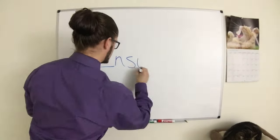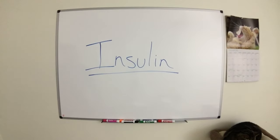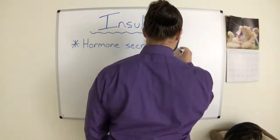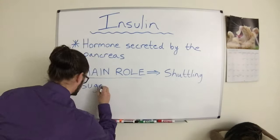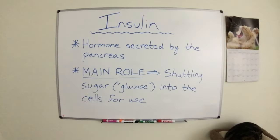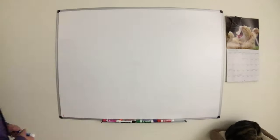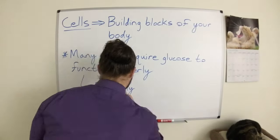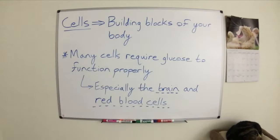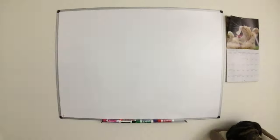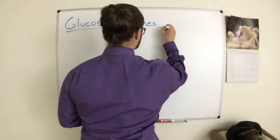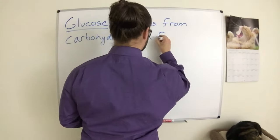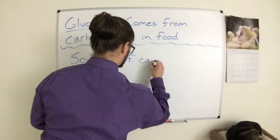Let's start with a brief lesson on insulin. Insulin is a hormone released by your pancreas, and its main role is to shuttle sugar, or glucose, into your body's cells for use. Many cells require glucose in order to function properly, particularly your brain and your red blood cells. These cells receive glucose from carbohydrates in the food that you eat, and then convert the glucose into energy.